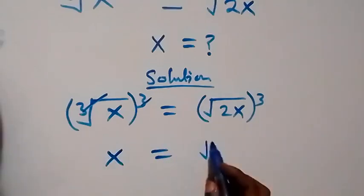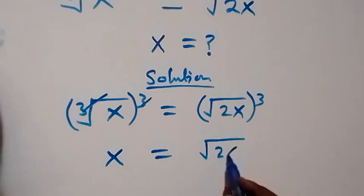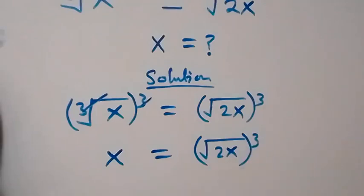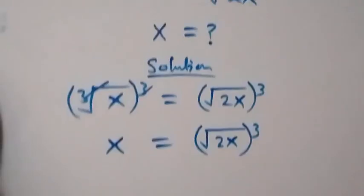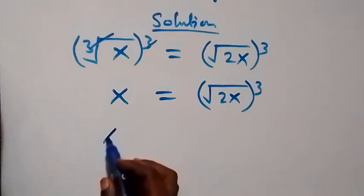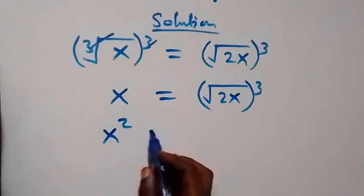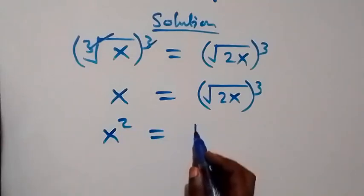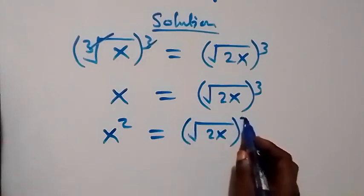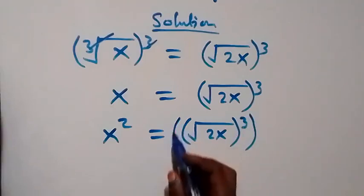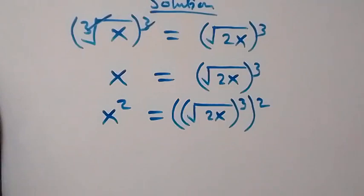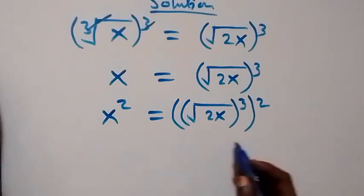So x equals the square root of 2x, all raised to power 3. Then the next step: let's square both sides. We have x squared now equals the square root of 2x, all raised to power 3, then all squared.